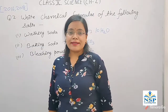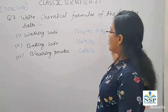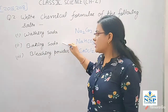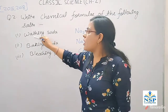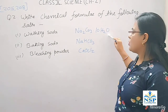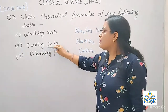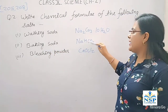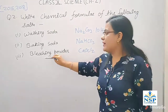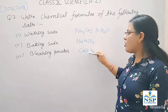Our next important question is: Write the chemical formula of the following salts — washing soda, baking soda, and bleaching powder. The formula of washing soda is Na2CO3·10H2O, which means hydrated sodium carbonate. The baking soda formula is Na2CO3, meaning sodium bicarbonate. And the bleaching powder formula is CaOCl2, which means calcium oxychloride.